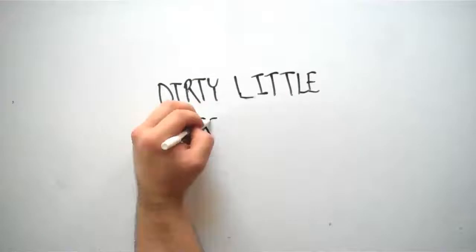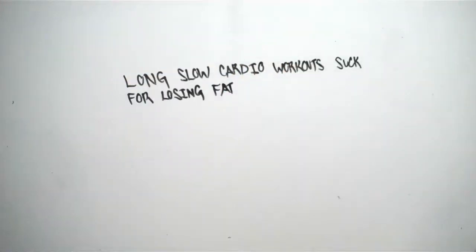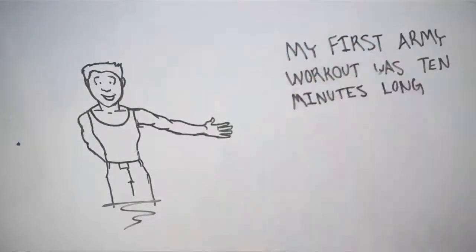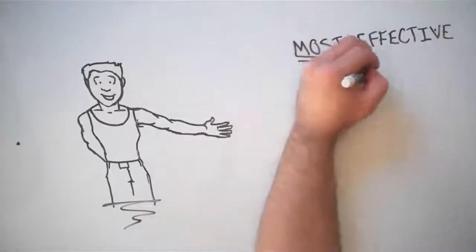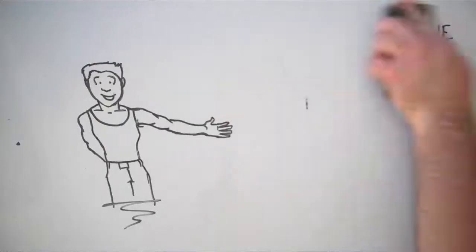Dirty little secret number one. Long, slow cardio workouts suck for losing fat. For the first 32 years of my life, I thought long, slow cardio workouts were the weapon of choice for eating a lean and toned stomach. This could not be further from the truth. My first workout in the army was a total of 10 minutes long. You heard that right. Just 10 minutes. And guess what? It was the most effective workout of my life. In 10 minutes, we did a combination of simple bodyweight exercises that gave me a better workout than any gym session or 45-minute jog I'd ever done.